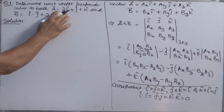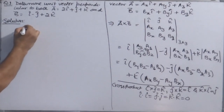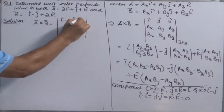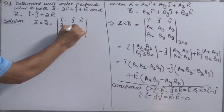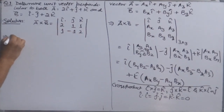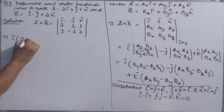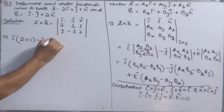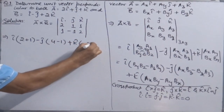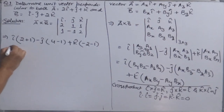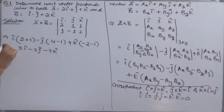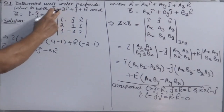Coming back to Question 1: first find a vector perpendicular to both, meaning find A cross B. Using the determinant: i-cap, j-cap, k-cap in the first row; coefficients of A are 2, 1, 1 in the second row; and 1, minus 1, 2 in the third row. Expanding: i-cap gives (1×2 minus 1×(minus 1)) = 3, minus j-cap gives (2×2 minus 1×1) = 3, plus k-cap gives (2×(minus 1) minus 1×1) = minus 3. So the result is 3i-cap minus 3j-cap minus 3k-cap.